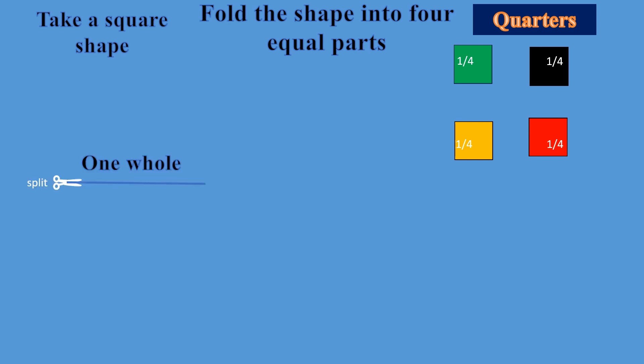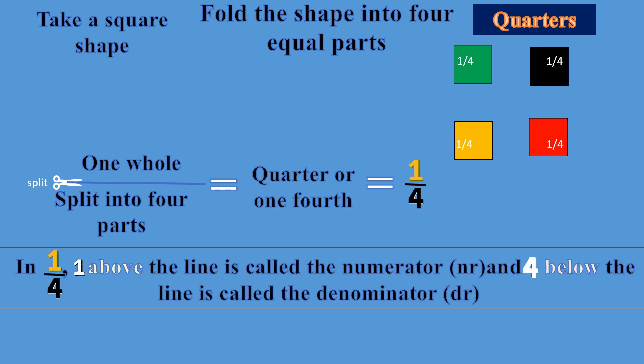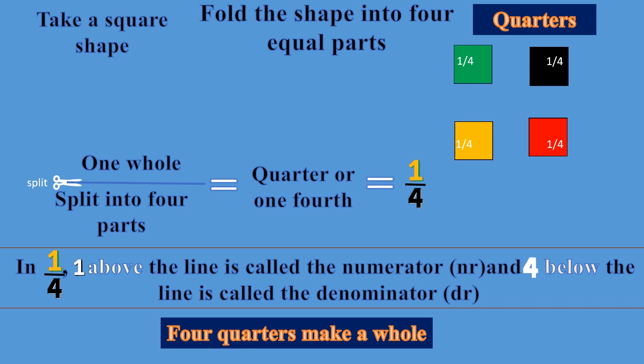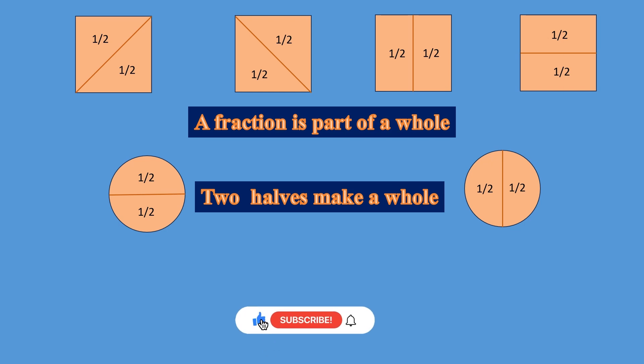That 1/4, one over four or one by four, is called one quarter. Mathematically we can write it like this: one whole split into four parts is equal to one quarter, or you can just say quarter or one fourth, which equals 1/4. In 1/4, one above the line is called the numerator and four below the line is called the denominator. Four quarters make a whole.